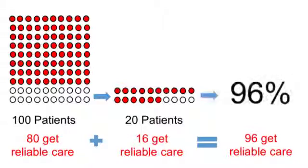You now have 96% of your patients getting reliable care. That's the concept of achieving at least 95% or better. The first step should be at least 80% reliable — if you do better, that's great. Have a backup plan to catch all of the patients who aren't caught in the first plan, and that will get you to your higher level of reliability.